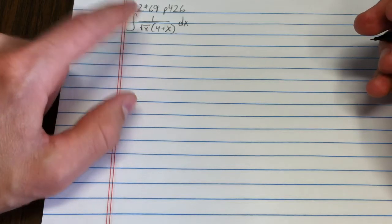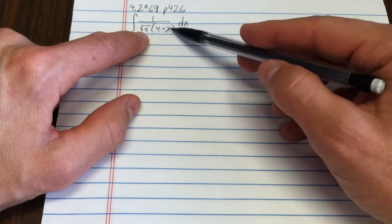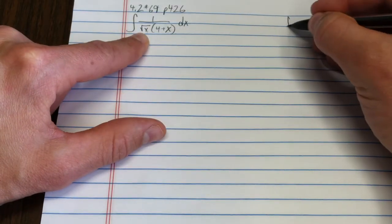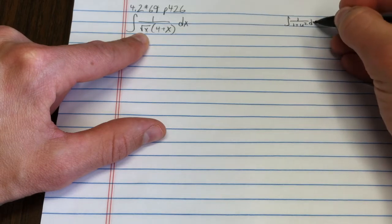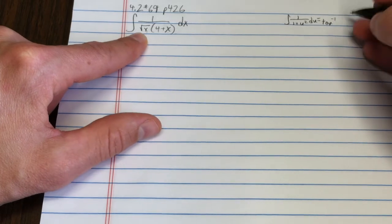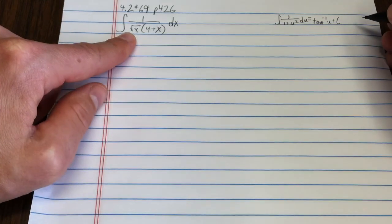Well, what things do I know that somehow have a term times a square? It comes to my mind that I know that the integral of 1 over 1 plus u squared du is arctan, or tan inverse, of u plus c. So you might consider that.